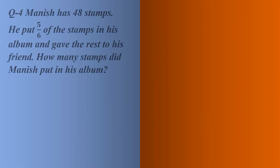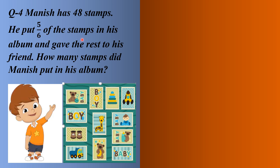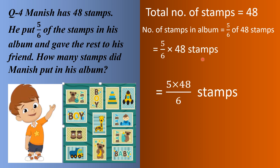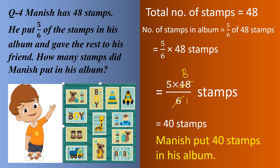Read word problems carefully. Manish has 48 stamps. He put 5/6 of the stamps in his album and gave the rest to his friend. How many stamps did Manish put in his album? Total stamps are 48. So we solve 5/6 multiplied by 48. Since 6 eights are 48, the answer is 40 stamps in his album. The remaining 48 minus 40 equals 8 stamps were shared with his friend.